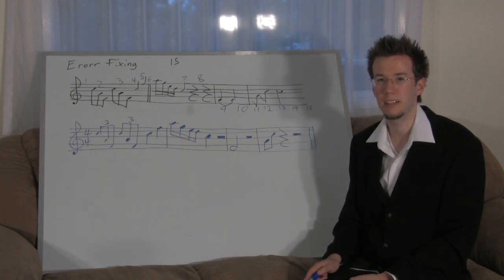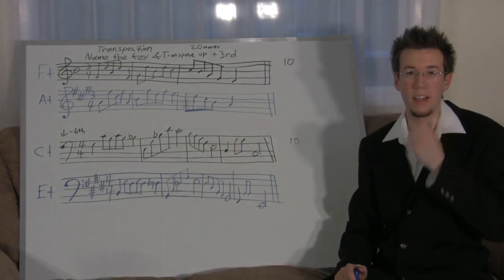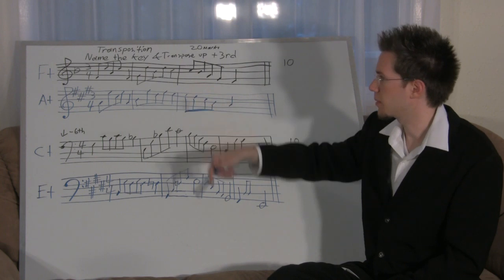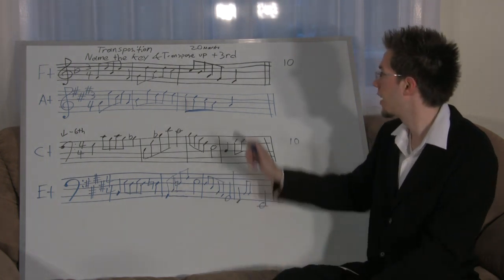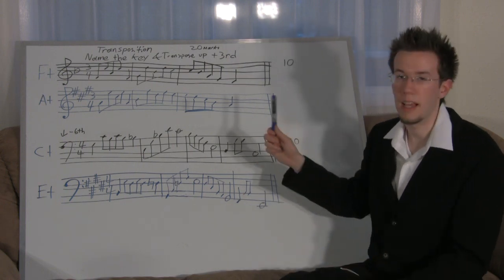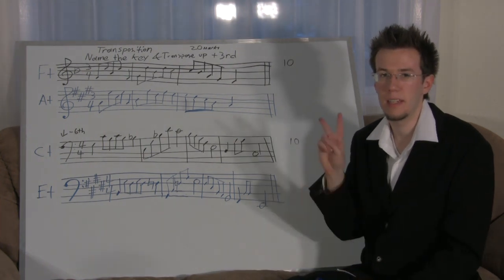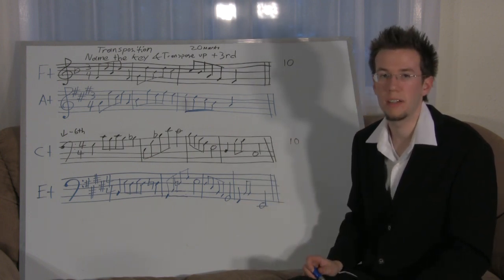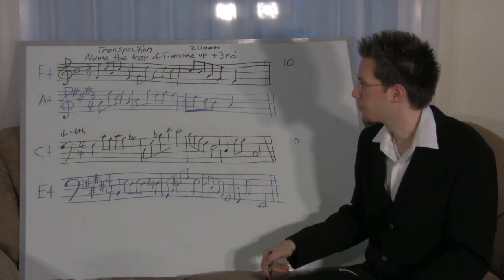For each mistake, take the mark off. I think error fixing is probably the hardest section to get fully correct — it can be a little weird, so if you didn't do well, don't worry. Now for transposition answers: the key for the first one is F major — pretty obvious from the B flat key signature, and it ends on F, starts on F. Always look at the last note combined with the key signature to determine the key.